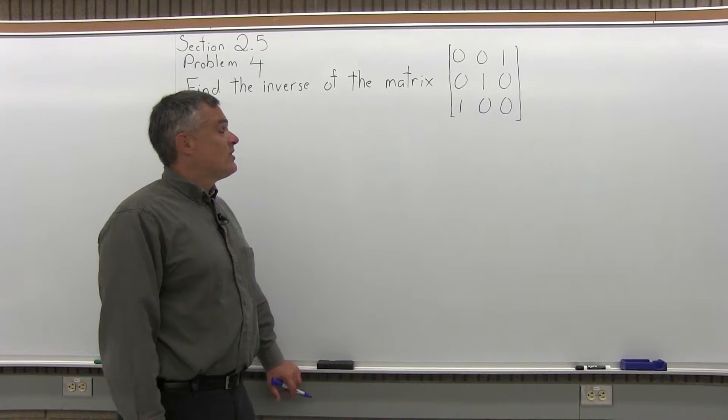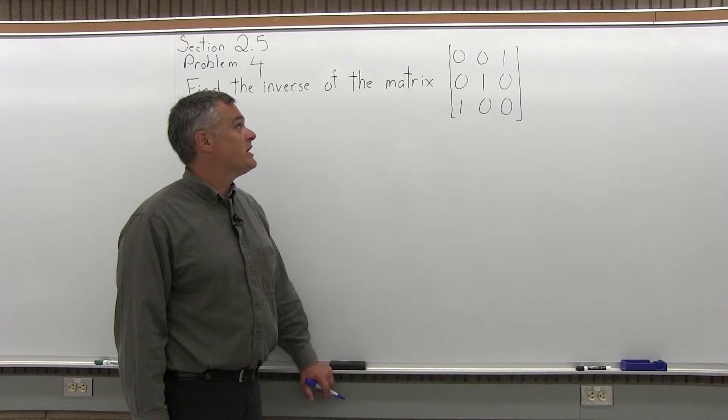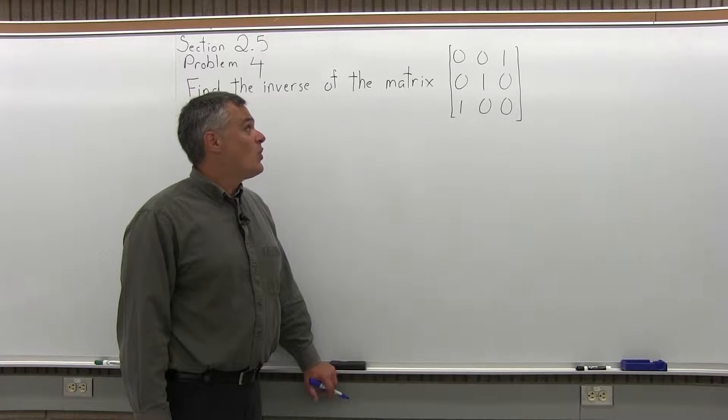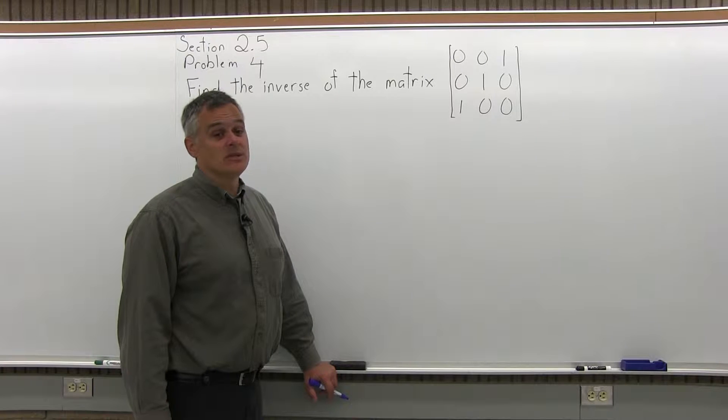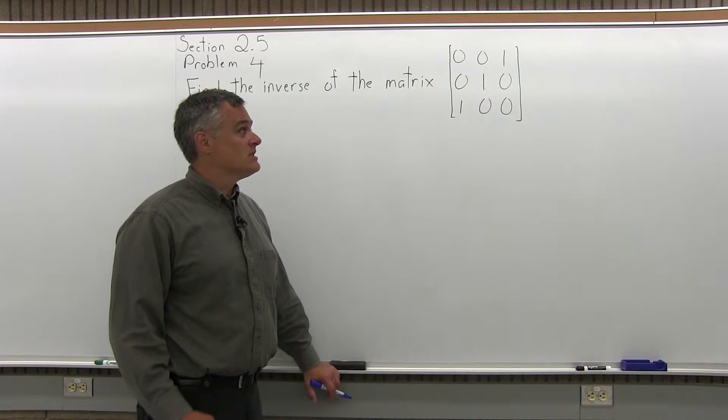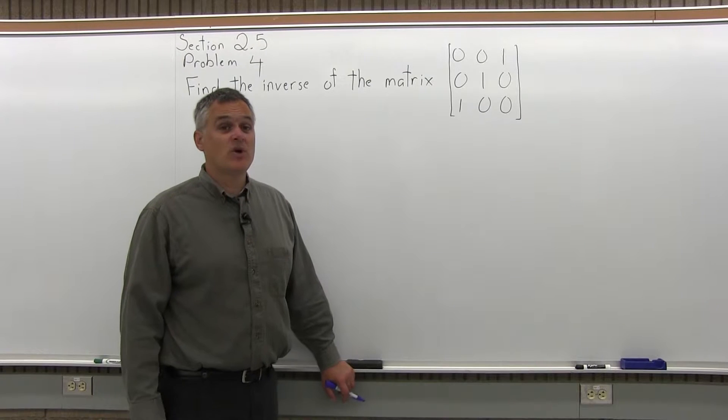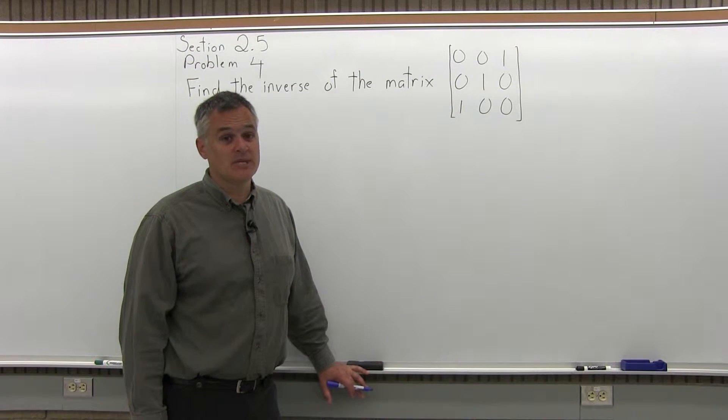This is problem number 4 of section 2.5. It says find the inverse of the matrix 001, 010, 100. So this is a bigger matrix. We have three rows in this matrix. It's bigger than the ones in the previous problems, but we're going to solve it with the same exact method.